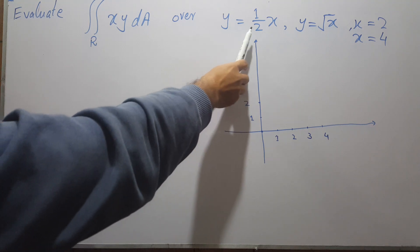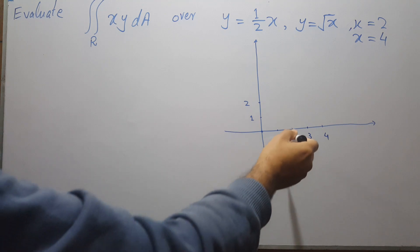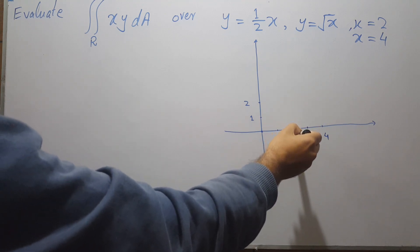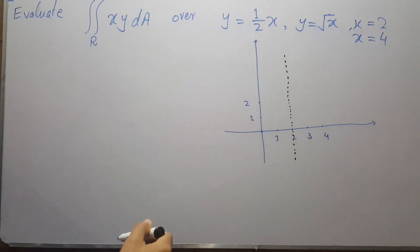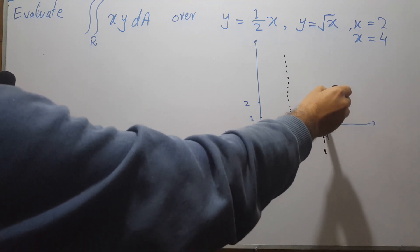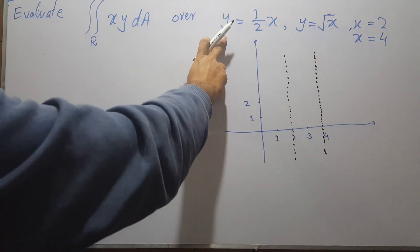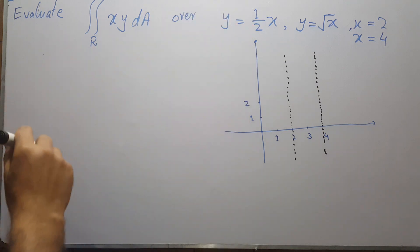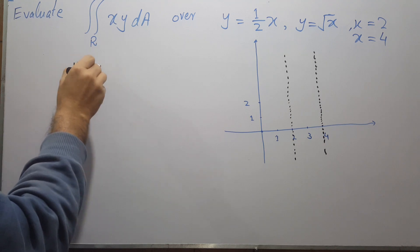We do not know which of the y limits is the upper limit and which is the lower limit. So to determine that, we need to sketch these equations. The first line is x equals 2, and the next one is x equals 4.